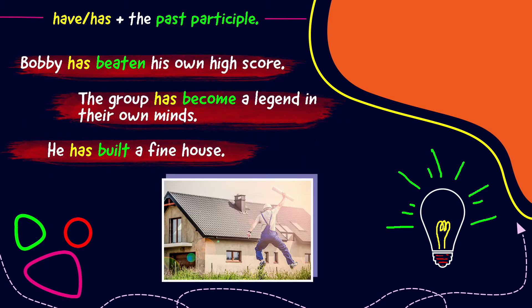Here are some irregular verbs where we've formed a past participle. Bobby has beaten his own high score. The group has become a legend in their own minds. He has built a fine house.